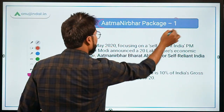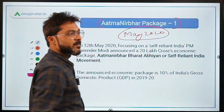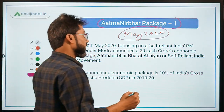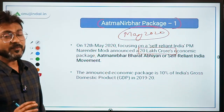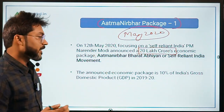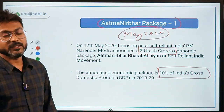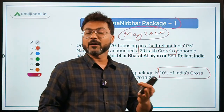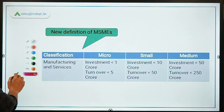The Atmanirbhar Bharat Package Part 1 was launched in May 2020, announced by the Honorable Prime Minister Narendra Modi. The total corpus of this package was ₹20 lakh crore, which is equivalent to approximately 10% of India's GDP.